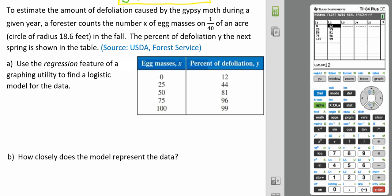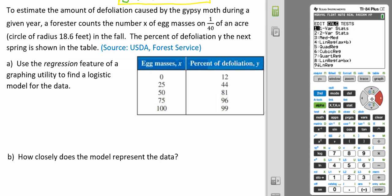Now that that's in, we're going to calculate our logistic model. We're going to go to Stat, arrow over to Calculate, and we're going to go down to Logistic Model. Arrow down to Option B where it says Logistic.